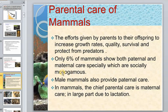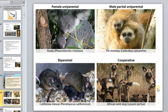Male mammals also provide paternal care, but the chief form of parental care in mammals is maternal care, largely due to lactation. We discussed the general principles, but the problem is that mammals are very different animals, so we classify these animals and talk about parental behavior within each class.